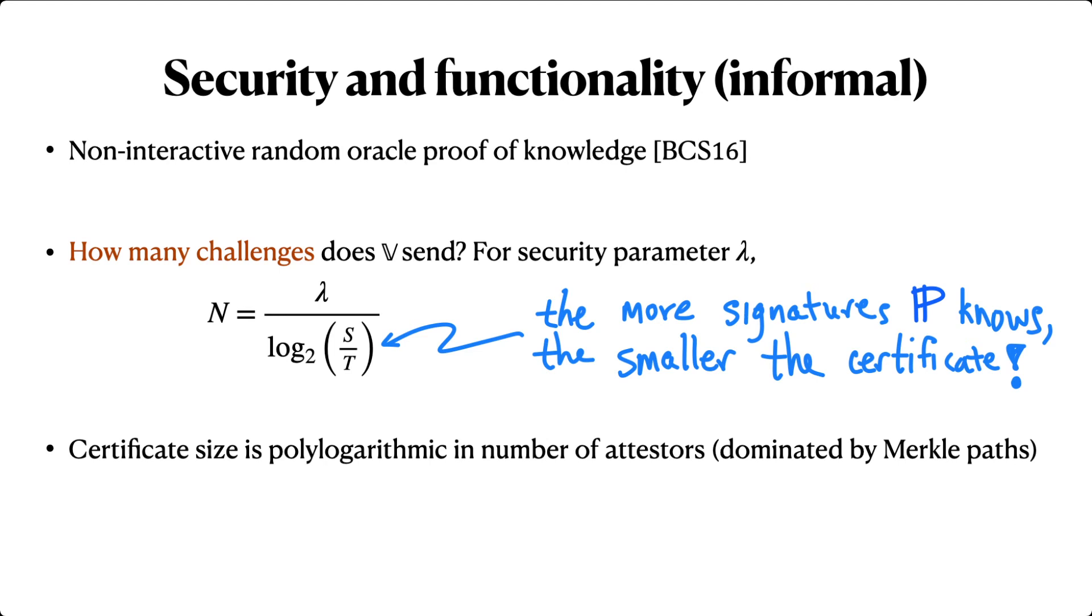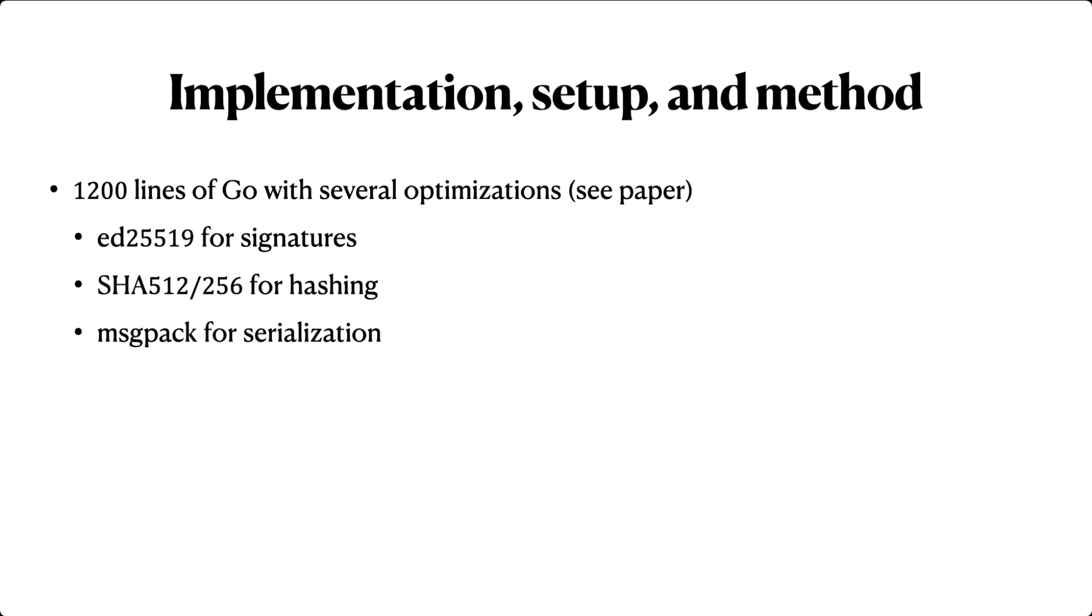This also means that the certificate size is indeed polylogarithmic in the number of attesters, as required by the compact completeness property. In practice, the size of the certificate is dominated by the authenticating paths for the Merkle trees. With that in mind, let's take a quick look at concrete performance.